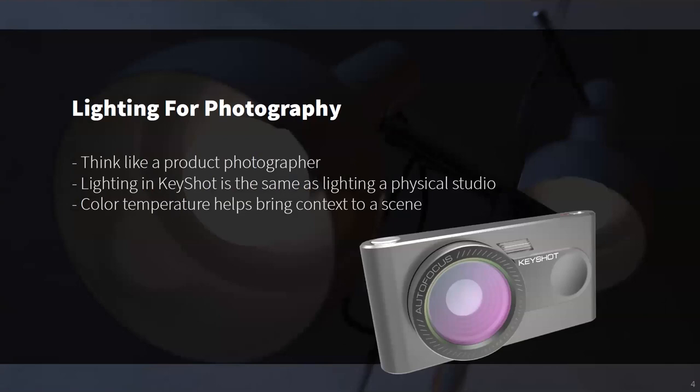Let's start off by generally discussing lighting for photography. It's important to understand that as a Keyshot user, you're essentially acting like a product photographer and should approach lighting your scenes with that in mind. The basic concept of lighting a scene in Keyshot is no different than operating lights in a physical studio environment, except you don't have the hassle of moving large lights, physical cameras, softboxes, or tables. It makes it a lot easier.